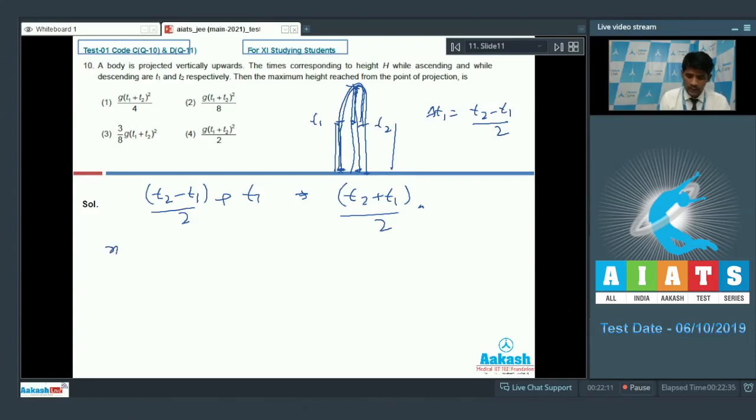We know for free falling body, this height h can be written down as 1 by 2 g. And this is the time of motion here, it is square. It is t2 plus t1 whole square divide by 4.